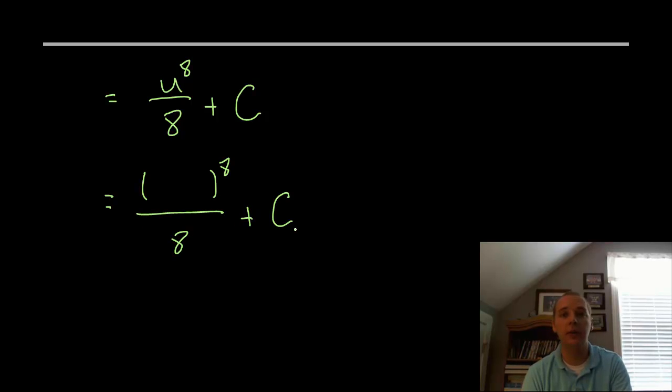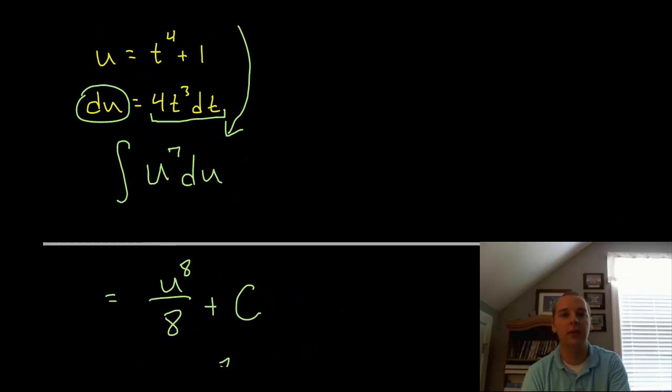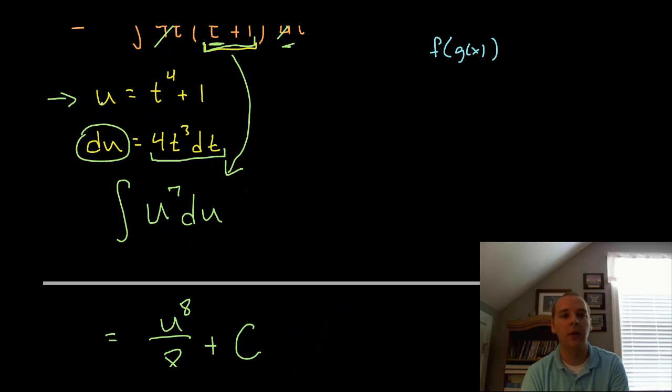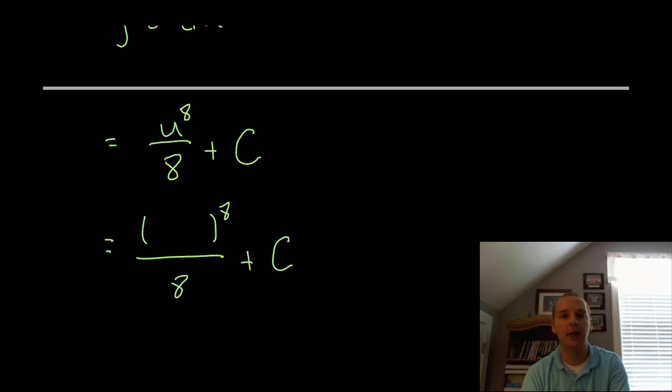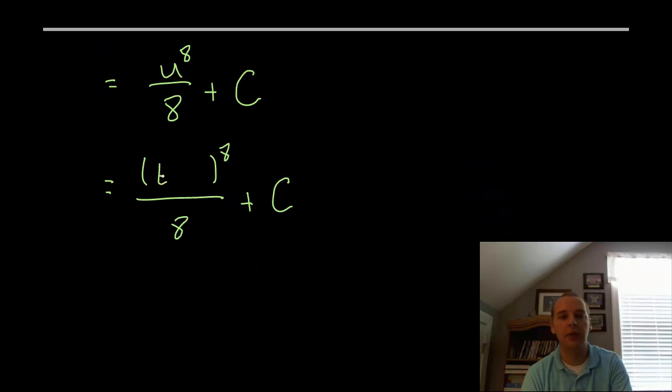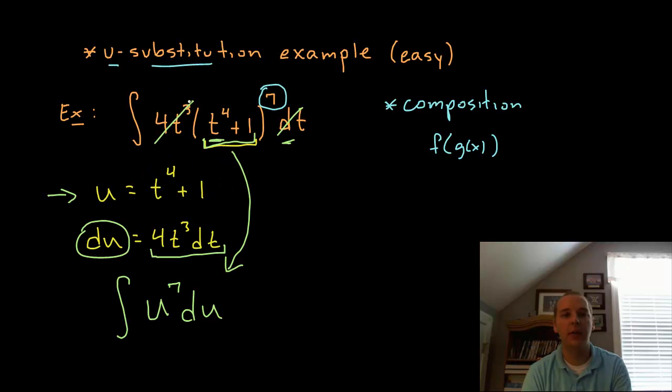So u, if you look right here, u was t to the 4th plus 1. So I can take that u out and plug in again t to the 4th plus 1. So this is called either the indefinite integral of 4t cubed times (t to the 4th plus 1) to the 7th, or you could call it the anti-derivative of this expression.